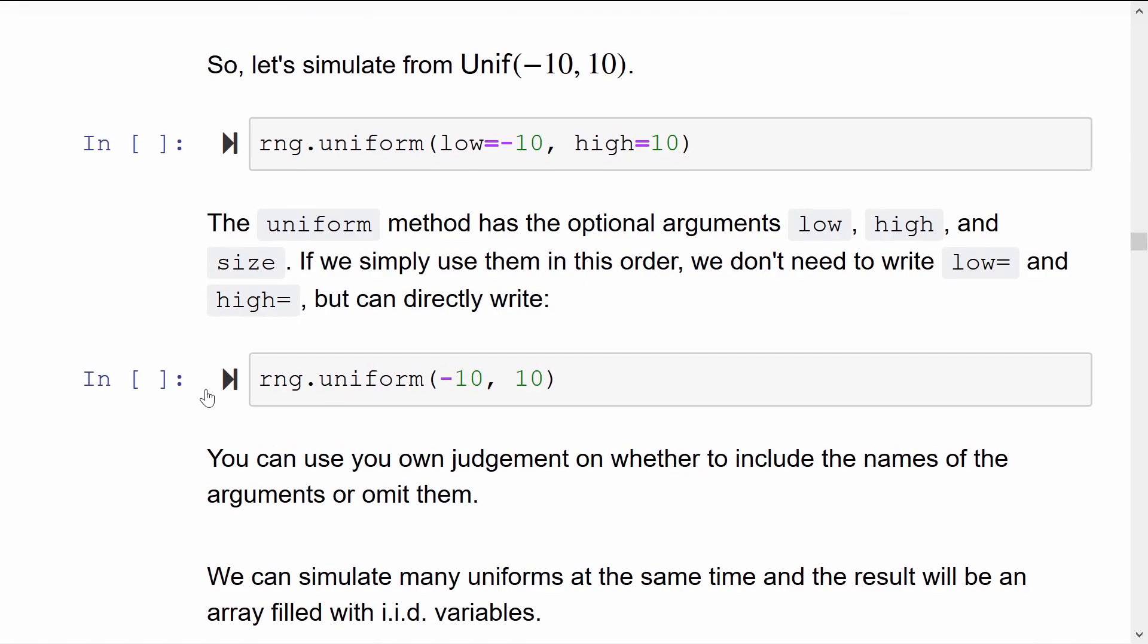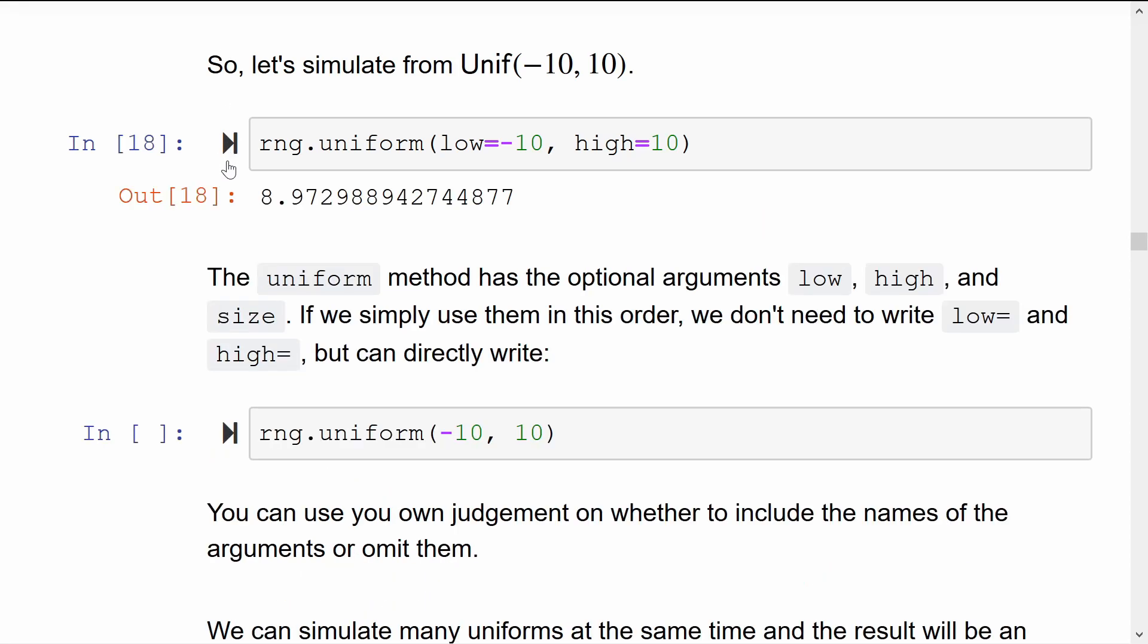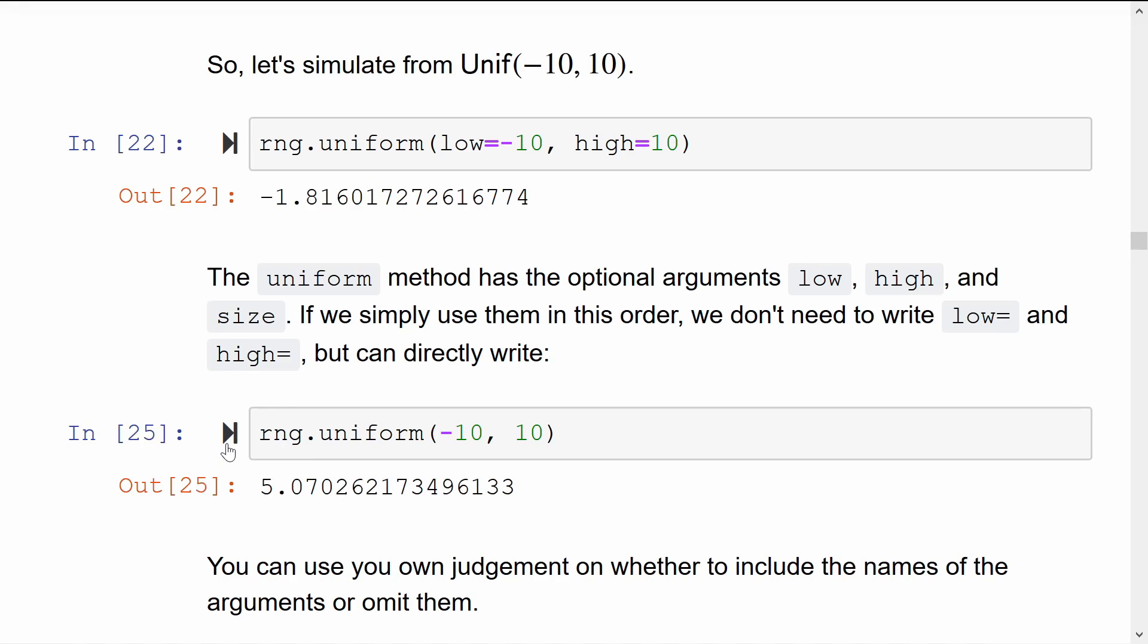To simulate from a uniform random variable over the range of minus 10 to 10, we plug in low equals minus 10, high equals 10, and voila. We don't actually need to type low equals and high equals. This gives us exactly the same results as the cell above.